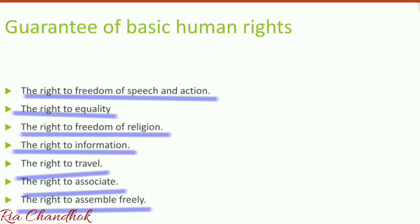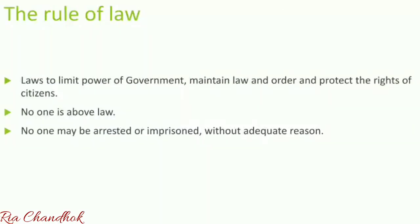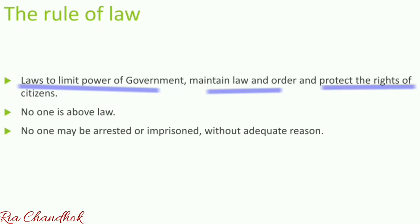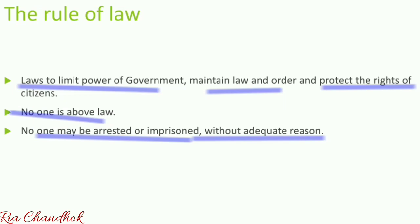In a democracy there are several laws to limit the power of the government, to maintain order and protect the rights of citizens. All citizens are equal in the eyes of the law — no one is above the law, not even a king or an elected president. No one may be discriminated against on the basis of race, religion, ethnic group, or gender. No one may be arrested or imprisoned without adequate reasons, and torture or ill-treatment of prisoners is forbidden. This is known as the rule of law.